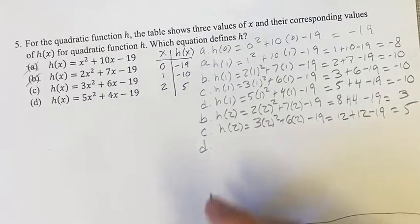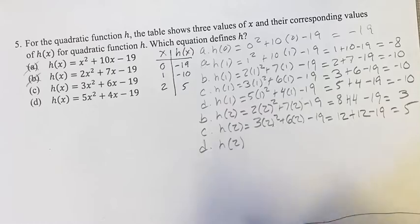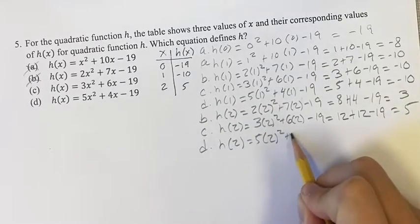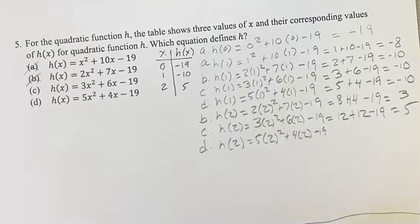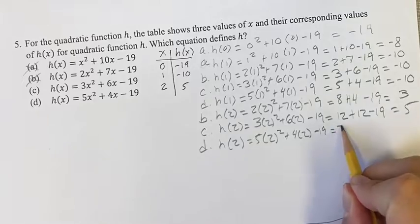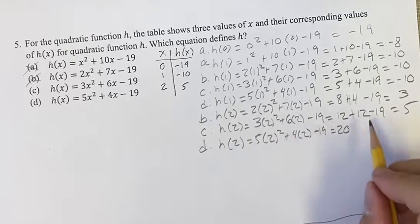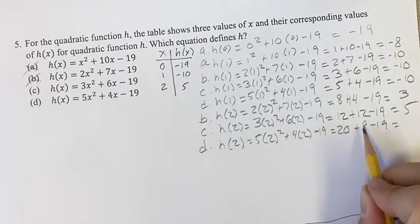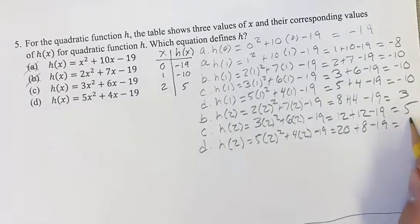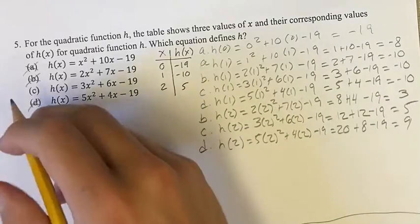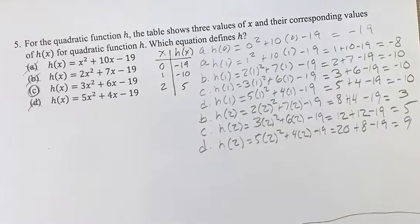We can just check d, it's not going to take us very long, just to see that d doesn't work. h(2) for d is 5(2²) + 4(2) - 19. 2² is 4, times 5 is 20, plus 4 times 2 is 8, minus 19. This is 20 + 8 = 28, minus 19 = 9. So d doesn't work. C, as we hoped, is our answer. As always, thank you for liking and subscribing, and I'll see you in the next video.